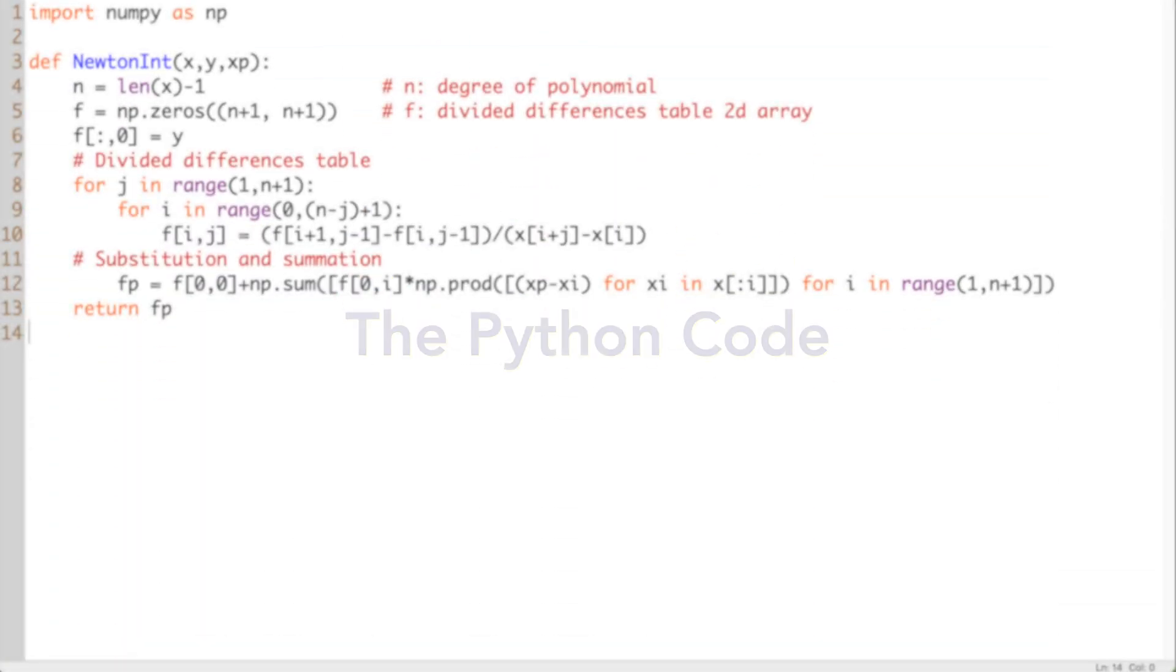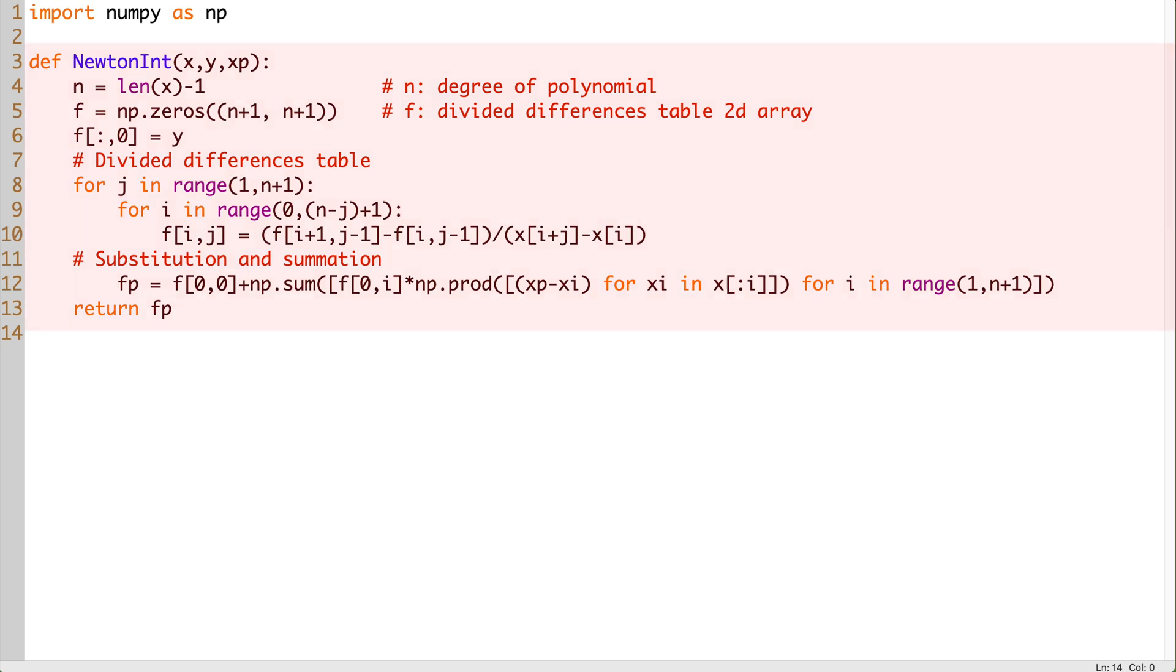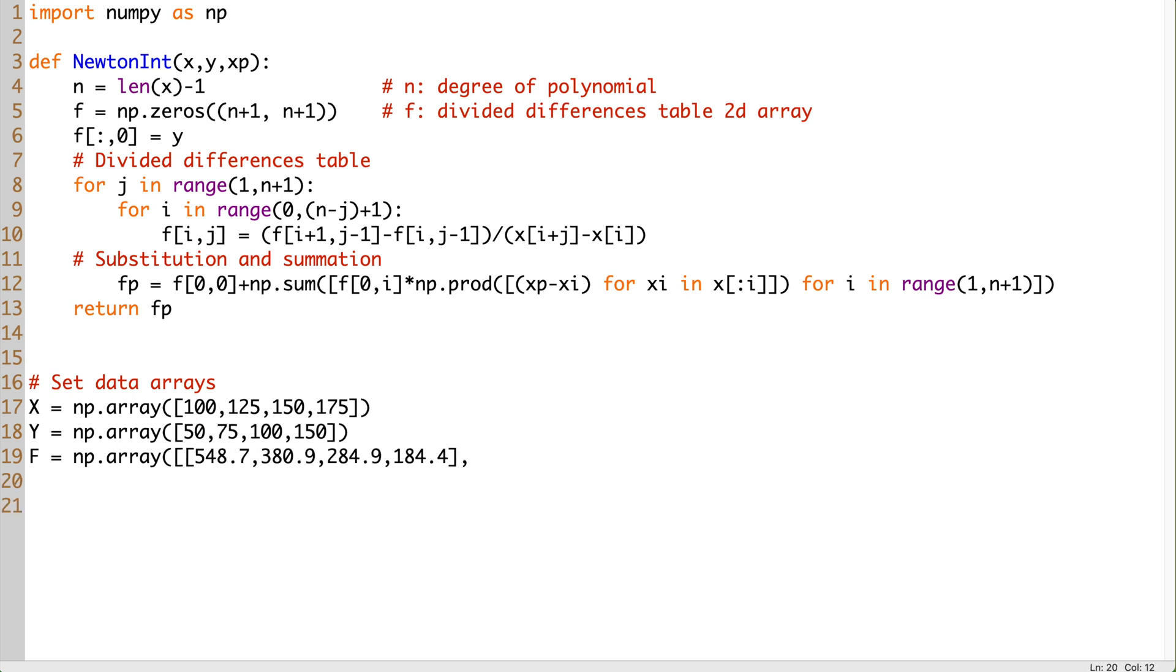To save time, I've already included interpolation function. If you want to learn about Newton's method, watch the tutorial video on this channel. The link is in the description below. First, let's create the array x, which contains the pressure values, the array y of temperature values, and the matrix f for all rows and columns inside the selected zone.